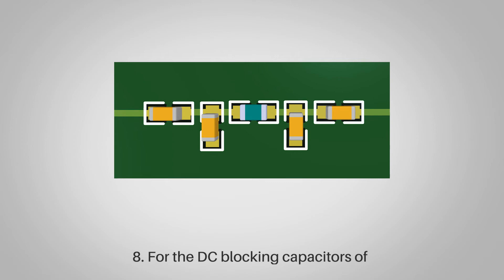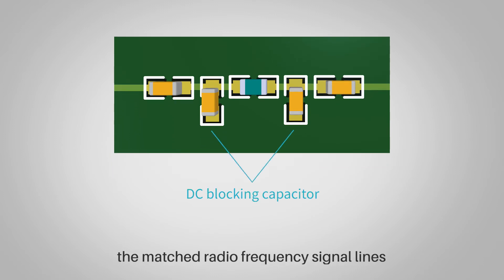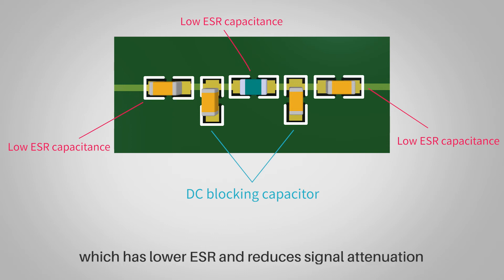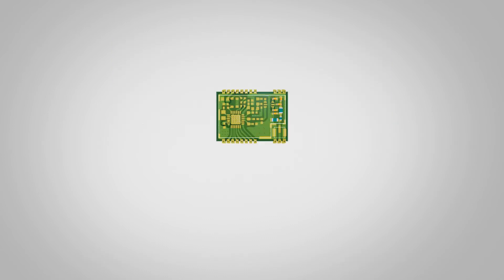Rule eight: For the DC blocking capacitors of matched radio frequency signal lines, it is best to use capacitors with SRF and signal frequency close to each other, which provides lower ESR and reduces signal attenuation.